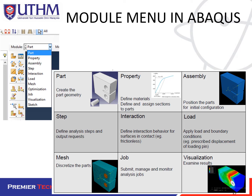Assembly is used to position the parts for initial configurations after you have created all the parts for a structure. Step is where you define the analysis step and output requests. Interaction is where you define the behavior for surfaces in contact, such as supports, surfaces between structures, and embedded reinforcement in concrete.